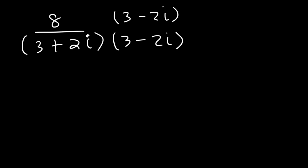You simply have to change the sign. So on top, let's distribute the 8. 8 times 3 is 24. 8 times negative 2i is negative 16i. On the bottom, let's FOIL. We know the two middle terms will cancel.